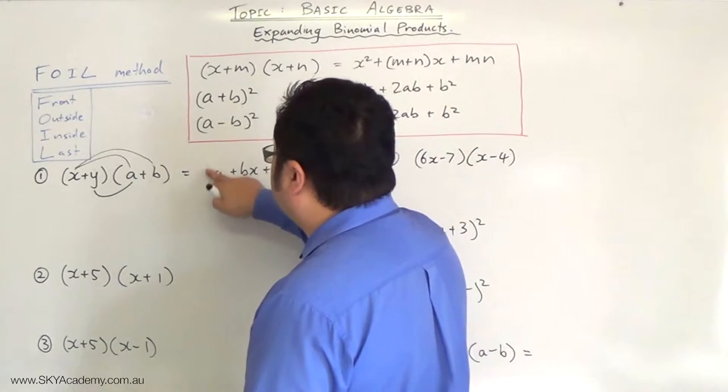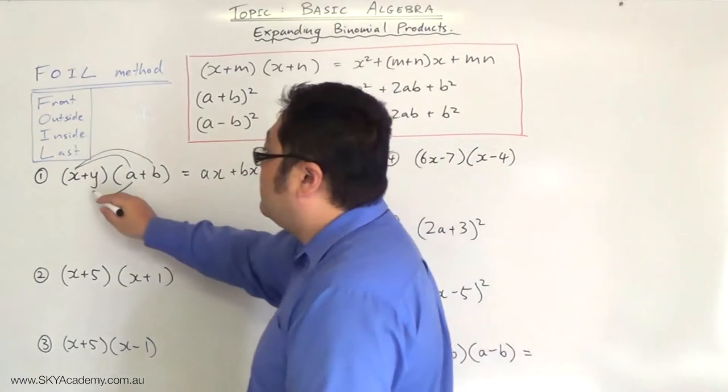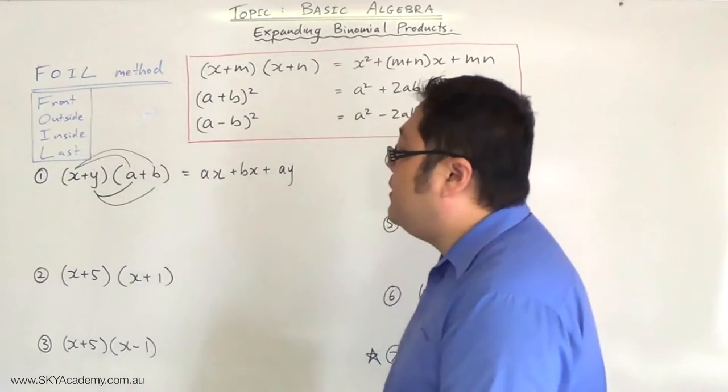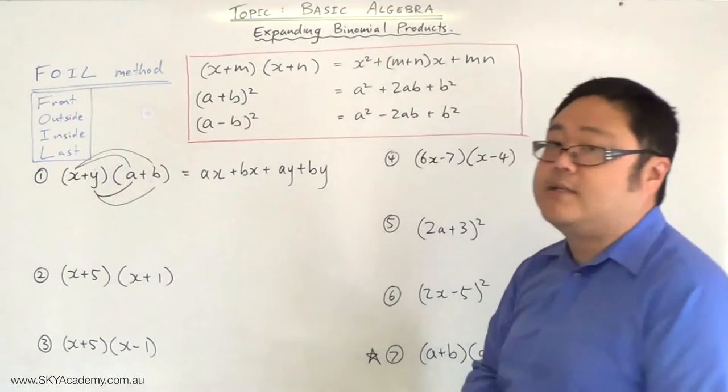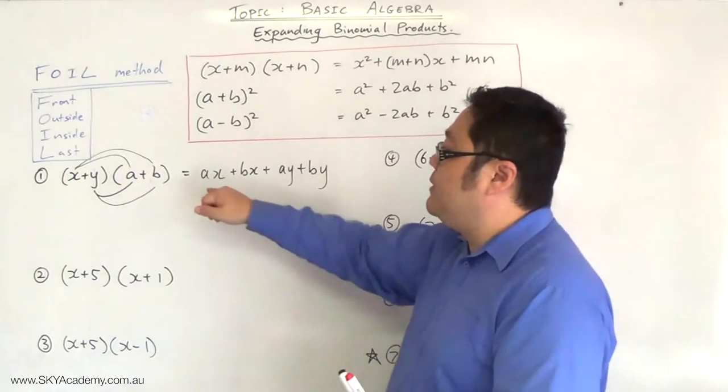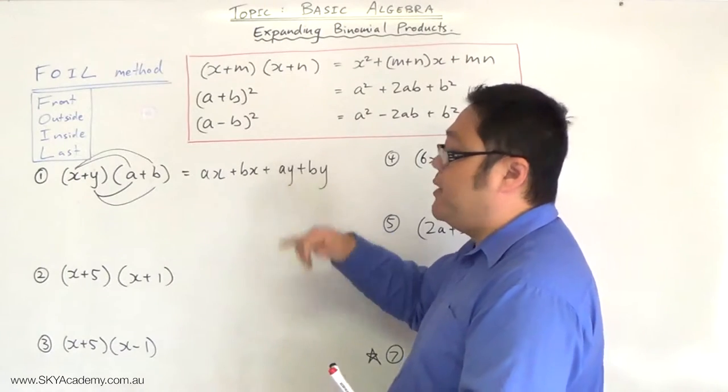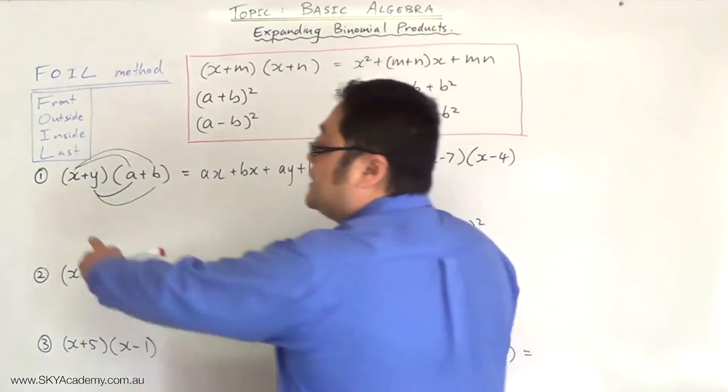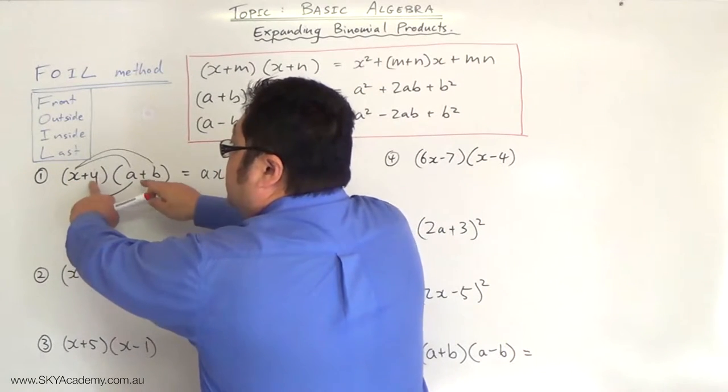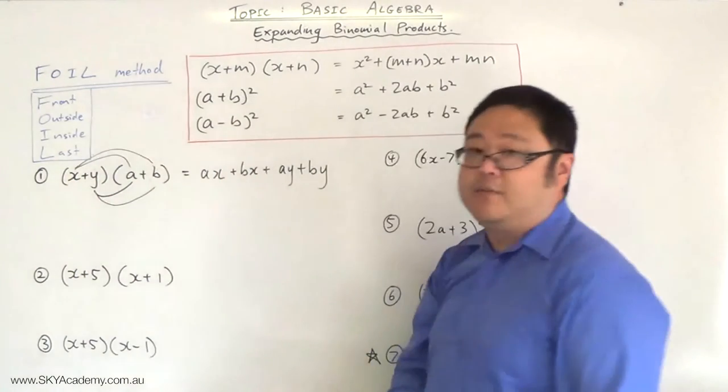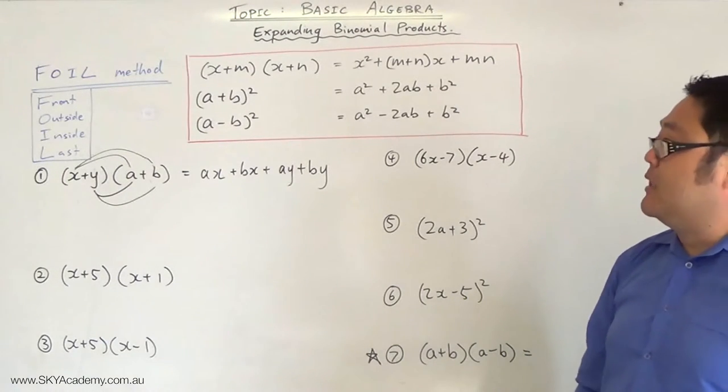And it's probably better if we write this as ax, although it really doesn't matter. And then the last two, by. So our binomial expansion becomes ax + bx + ay + by. Basically what you're doing is taking this term and multiplying by each of these two terms, and then taking this term and multiplying by each of these two terms. That's how you do any binomial expansion.